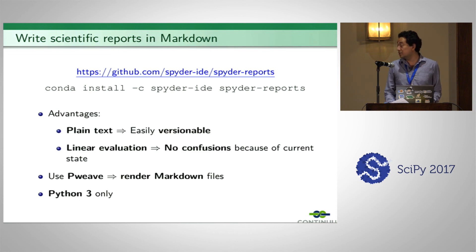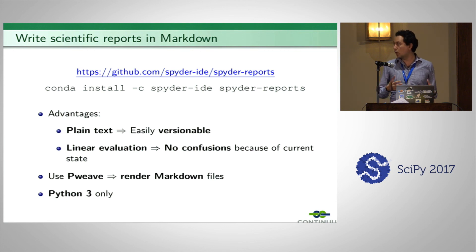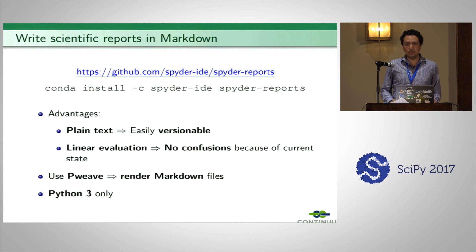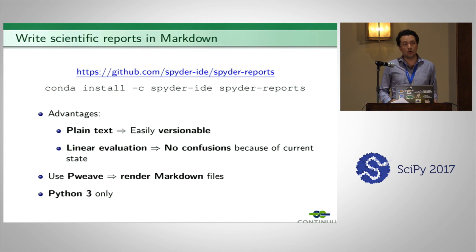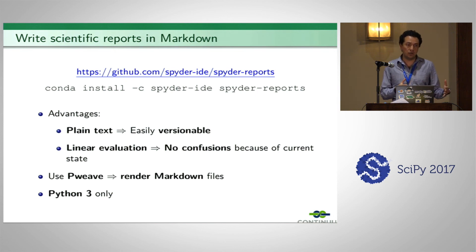The advantages of this approach are: first, Markdown files are plain text files so they are easily versionable, which is not the case for notebooks. Second, when rendered, these files are evaluated in a linear order, so there can be no confusion about the current state of variables or order of evaluation — which is also a problem in notebooks, where non-linear execution can cause confusion.